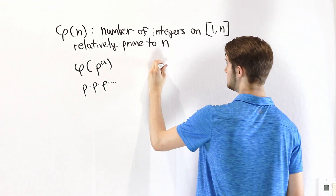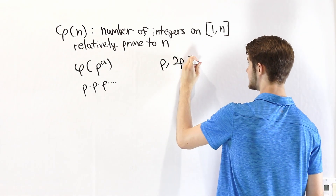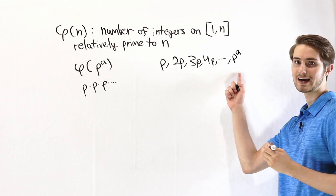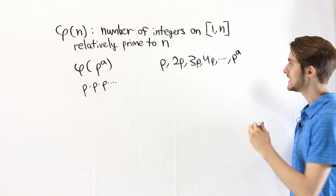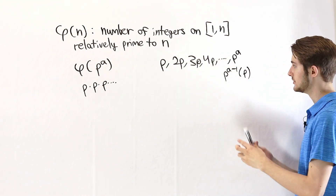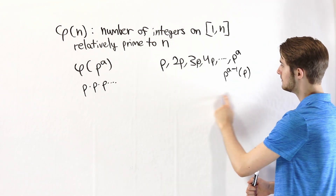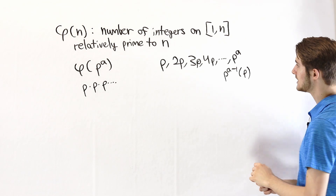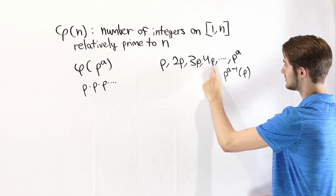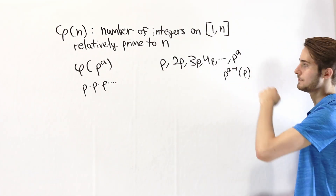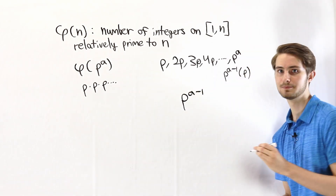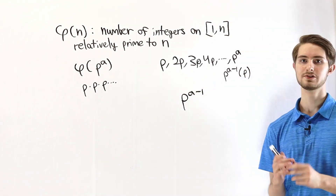What that means is that all of the numbers that share a factor with P to the A are just all the multiples of P. Those are going to be P, 2P, 3P, 4P, and so on, all the way up to P to the A — the last number in our interval. We can also write P to the A as P to the A minus 1 times P. We do this because our goal is to count the number of integers in this set, and we can see that all of these are multiples of P, so the number of multiples is P to the A minus 1.